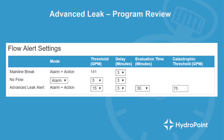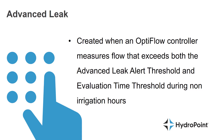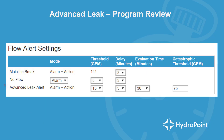With an OptiFlow controller, when you're programming your mainline and you come to your flow alert settings, you'll be asked to program your advanced leak alert threshold and your evaluation time. The advanced leak alert is created when an OptiFlow controller measures flow that exceeds both the advanced leak alert threshold and the evaluation time threshold during non-irrigation hours.